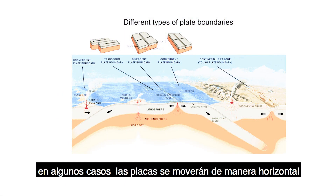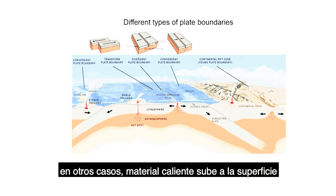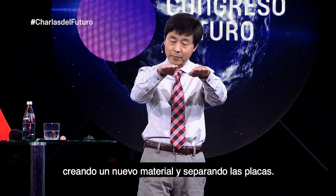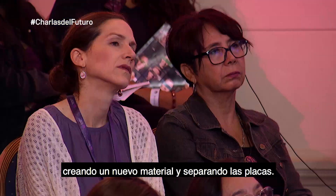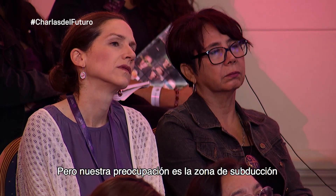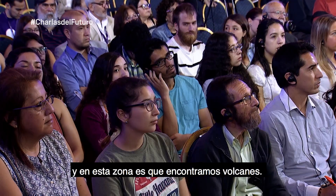There are also other types of boundaries. In some cases, two plates move horizontally past each other. In other cases, hot material comes up to form new crust and the plates move apart. But our main concern is the subduction zone.